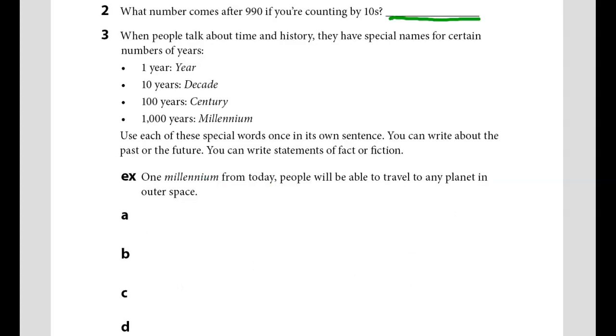For number three, we are thinking more about our centuries by thinking more about time. When people talk about time and history, they have special names for certain numbers of years. When we're talking about just one year, we use the word year. When we're talking about ten years, we use the word decade. When we're talking about one hundred years, we use the word century. When we talk about one thousand years, we use the word millennium.